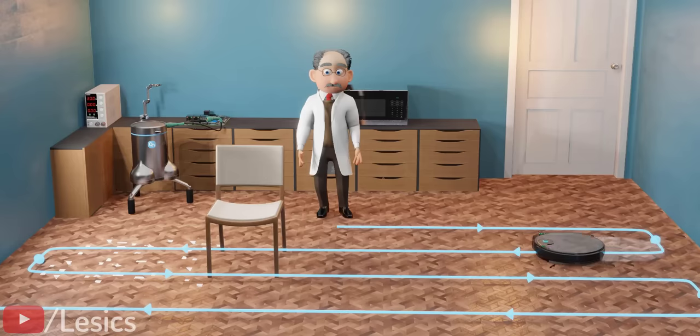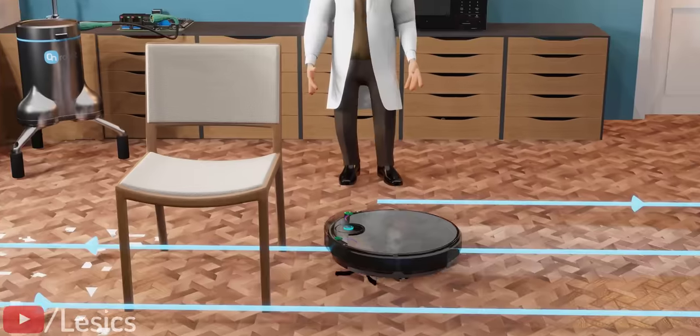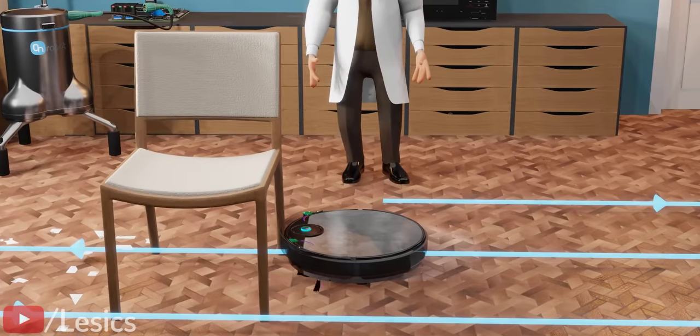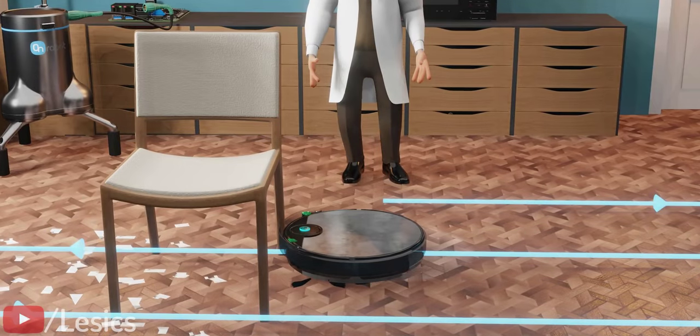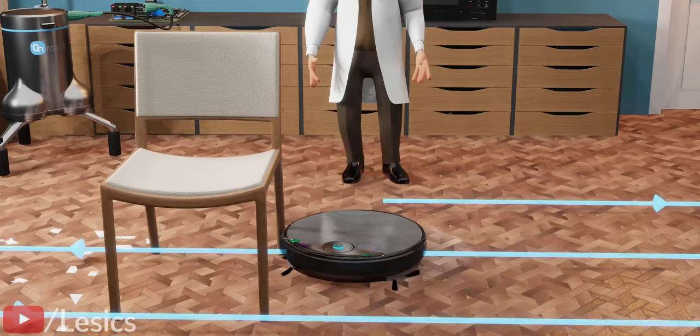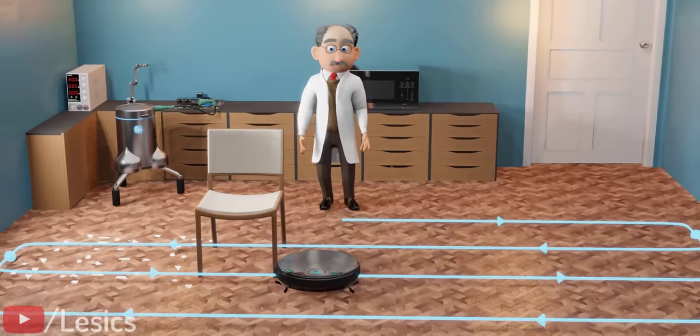Now, although these sensors are enough to clean this room, the chair is still a problem. As the robot is unable to differentiate between a chair and a wall, and is programmed to take a turn after hitting a wall, our robot will turn and leave this area uncleaned.